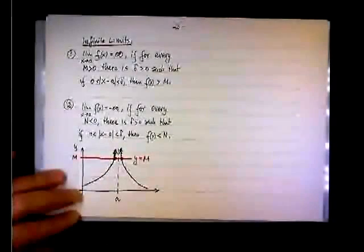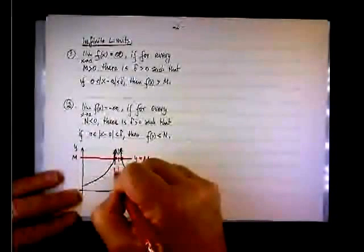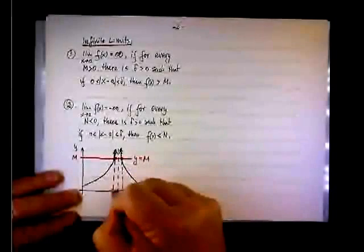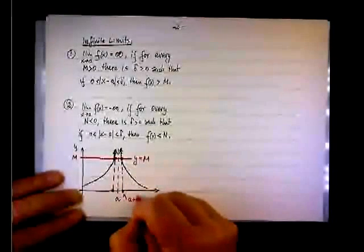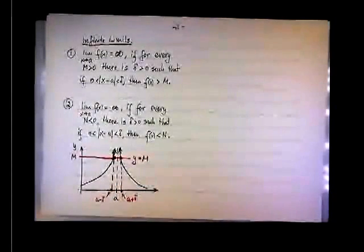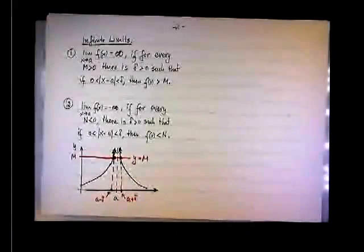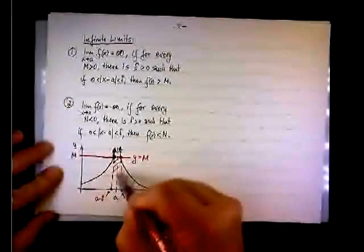And I want f of x to be greater than that. To accomplish this, I'm going to drop down, and the intersection with the x-axis will be either, this point will be a plus delta, and this point will be a minus delta.